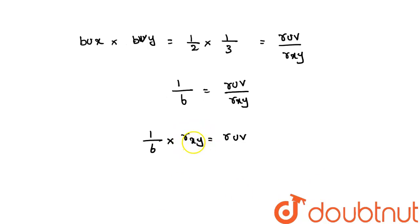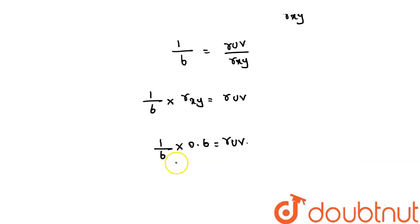rxy value is 0.6. So 1 divided by 6 into 0.6 is equal to ruv. If we simplify this, ruv is equal to 0.1.